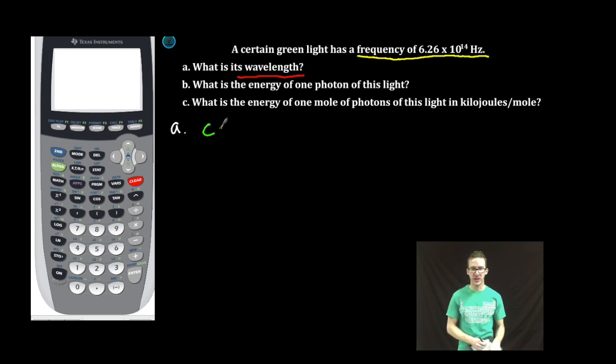Easy enough. Speed of light is equal to wavelength times frequency. Speed of light is a constant 3.00 times 10 to the 8 meters per second. Wavelength, I don't know. That's what we're solving for. That is the saddest lambda I've ever drawn. Times frequency, 6.26 times 10 to the 14 hertz.